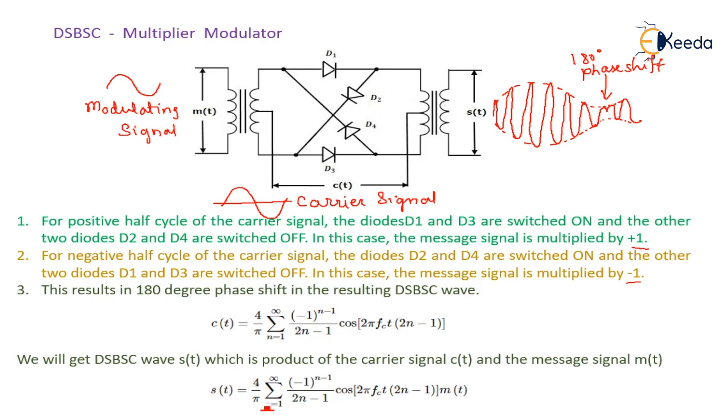And the final expression is s of t equal to 4 upon pi, summation of n equal to 1 to infinity, minus 1 raised to power n minus 1, over 2n minus 1, cos of 2 pi fc t, 2n minus 1, into M of t. Here the product—carrier signal as it is, but it is getting multiplied by M of t. So that's why its name is multiplier modulator or product modulator.